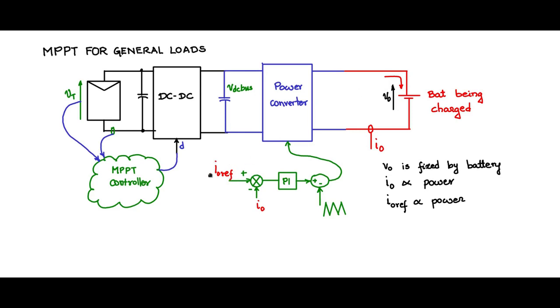So I0 ref is proportional to power and there is this MPPT controller which is measuring V and I of the PV panel and trying to give an output here which is proportional to the maximum power that the PV can deliver. We can connect this to this reference. So let the reference I0 reference be set by MPPT controller such that maximum power can be delivered to the battery source for charge.